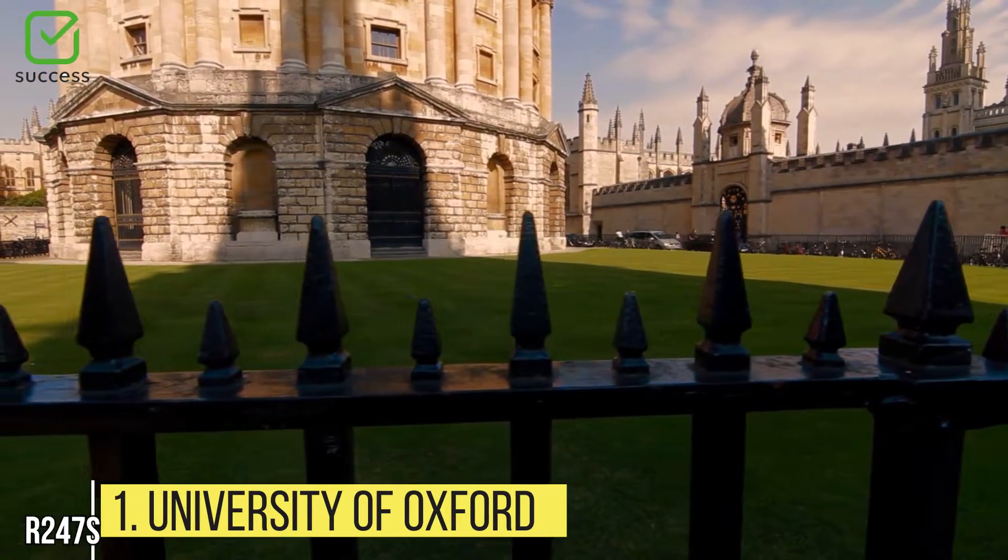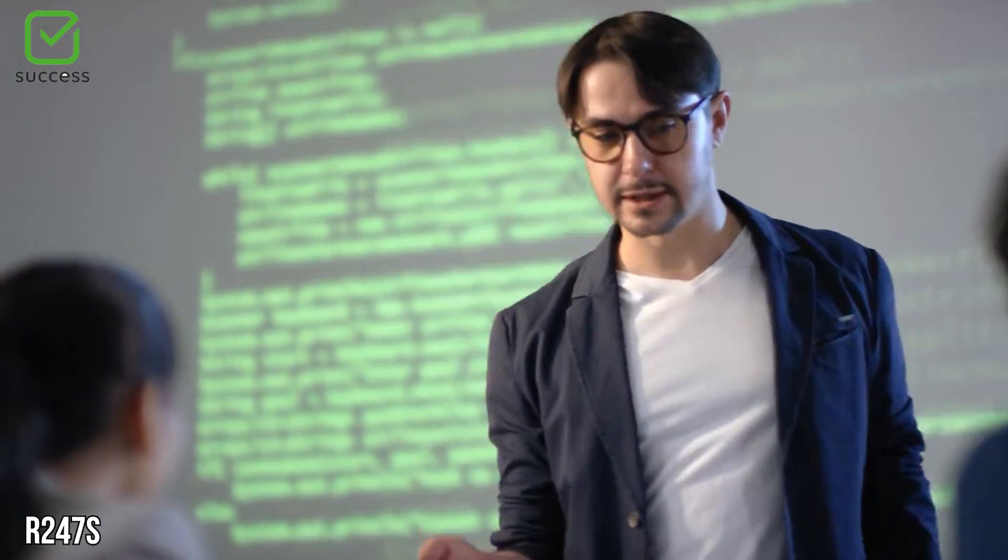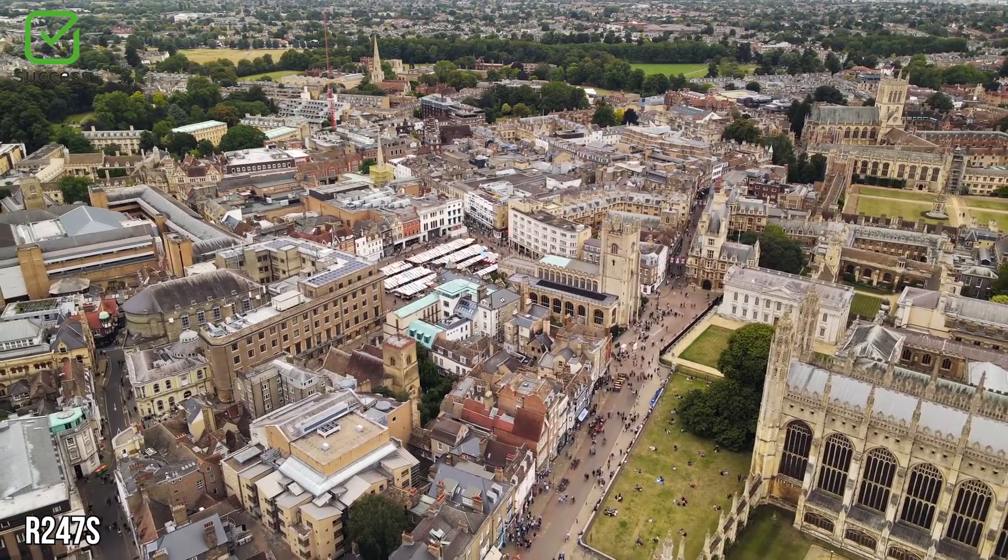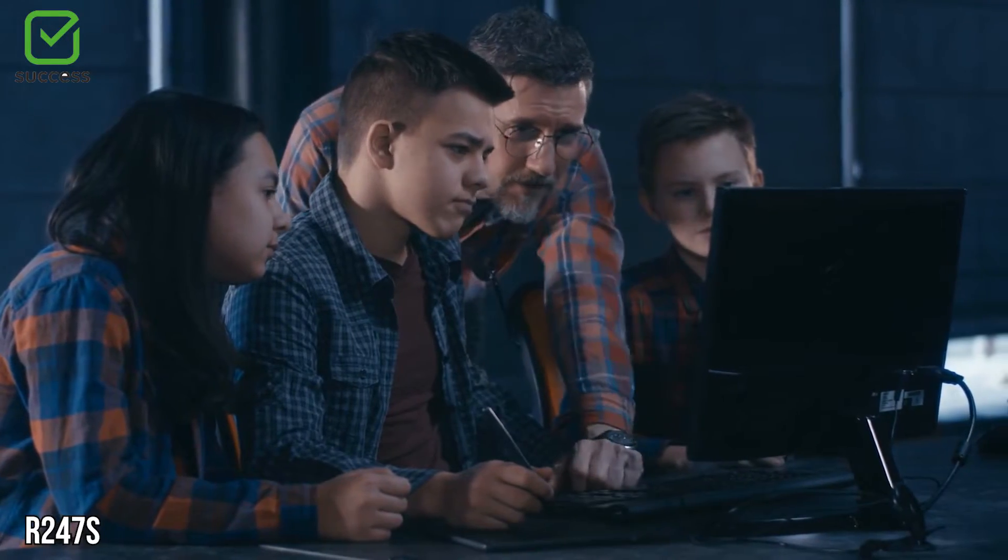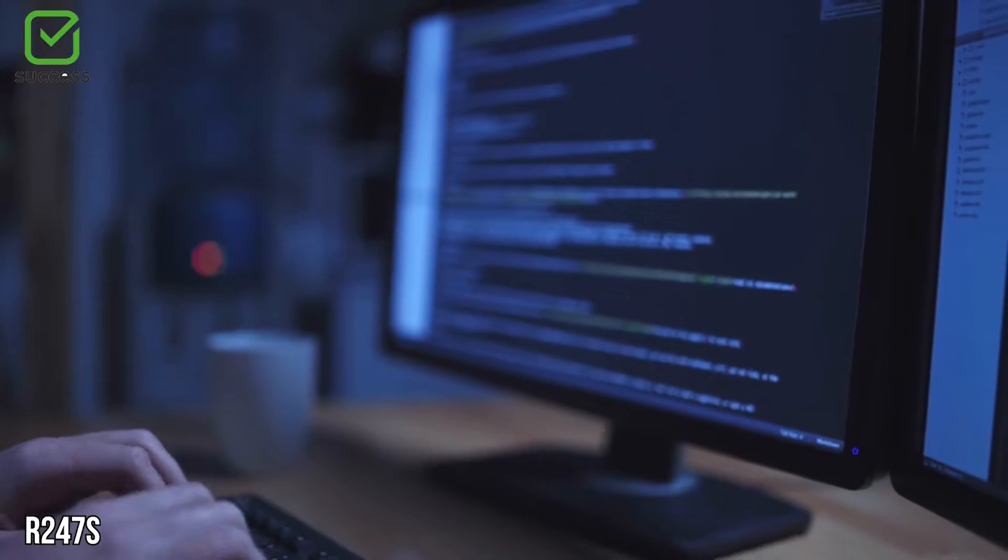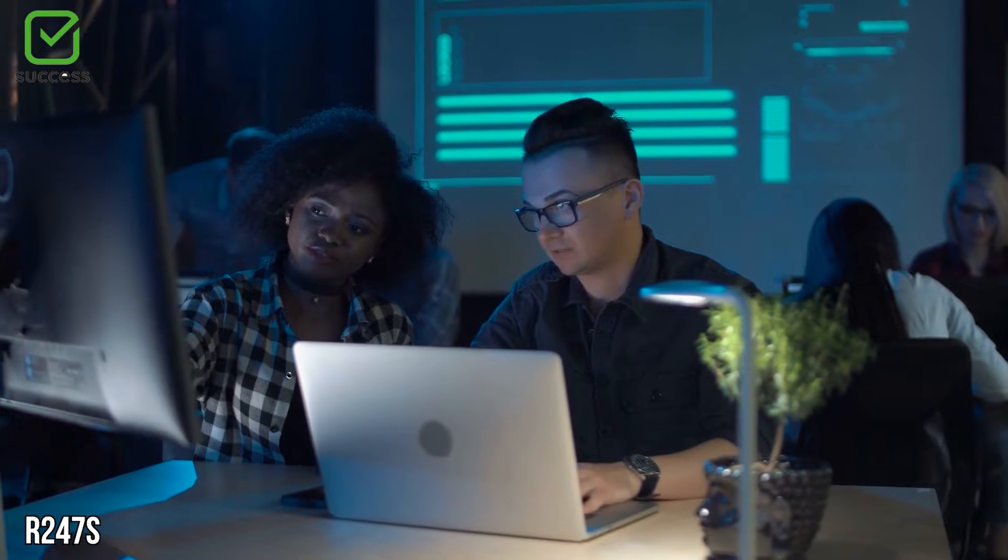University of Oxford. Despite the fact that computer science is a relatively recent field of study, the University of Oxford has one of the country's oldest computer science departments. Computer science courses at Oxford encompass areas including computational biology, quantum computing, linguistics, information systems, software verification, and software engineering.